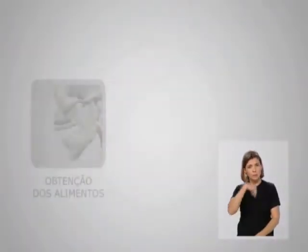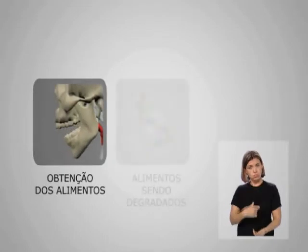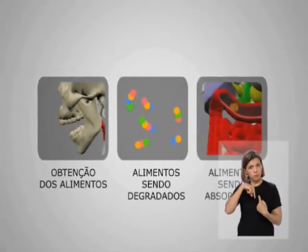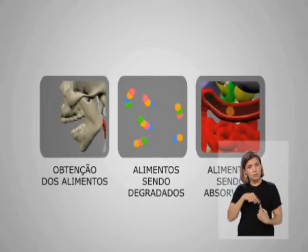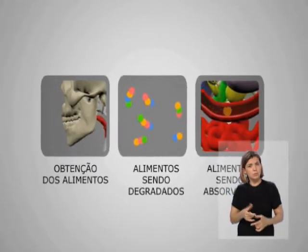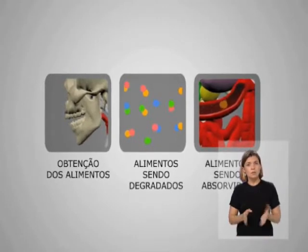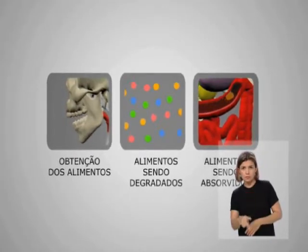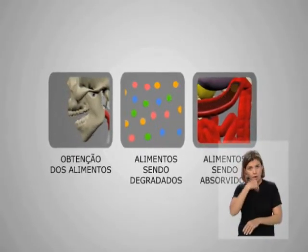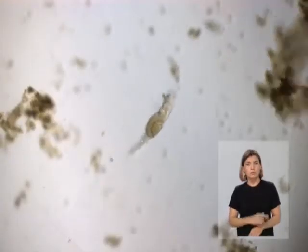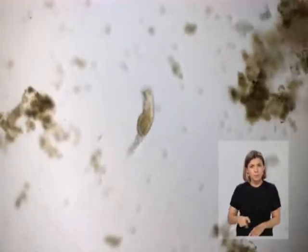Os rotíferos se alimentam exatamente como a gente: ingerem os alimentos pela boca, de onde transitam por outros órgãos do sistema digestório, até que os resíduos não aproveitáveis são expelidos pelo ânus. Apesar do seu pequeno tamanho, os rotíferos possuem um sistema digestório completo. Na dieta dos rotíferos entram bactérias, algas, protozoários e matéria orgânica em decomposição.